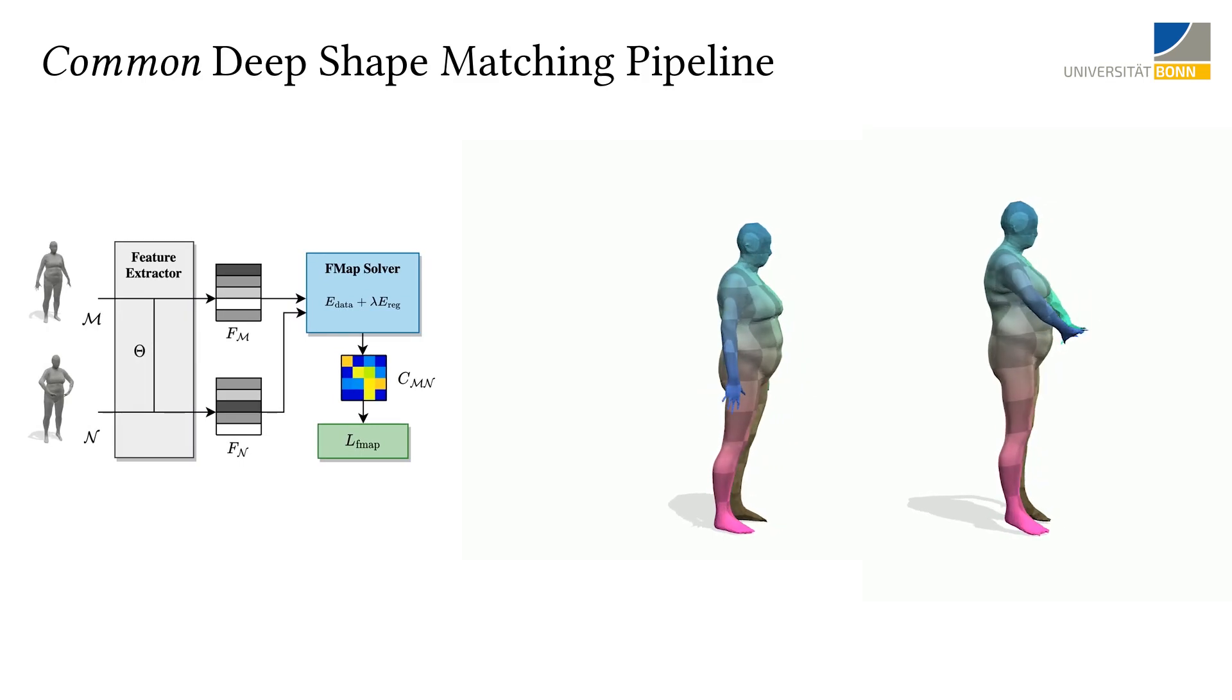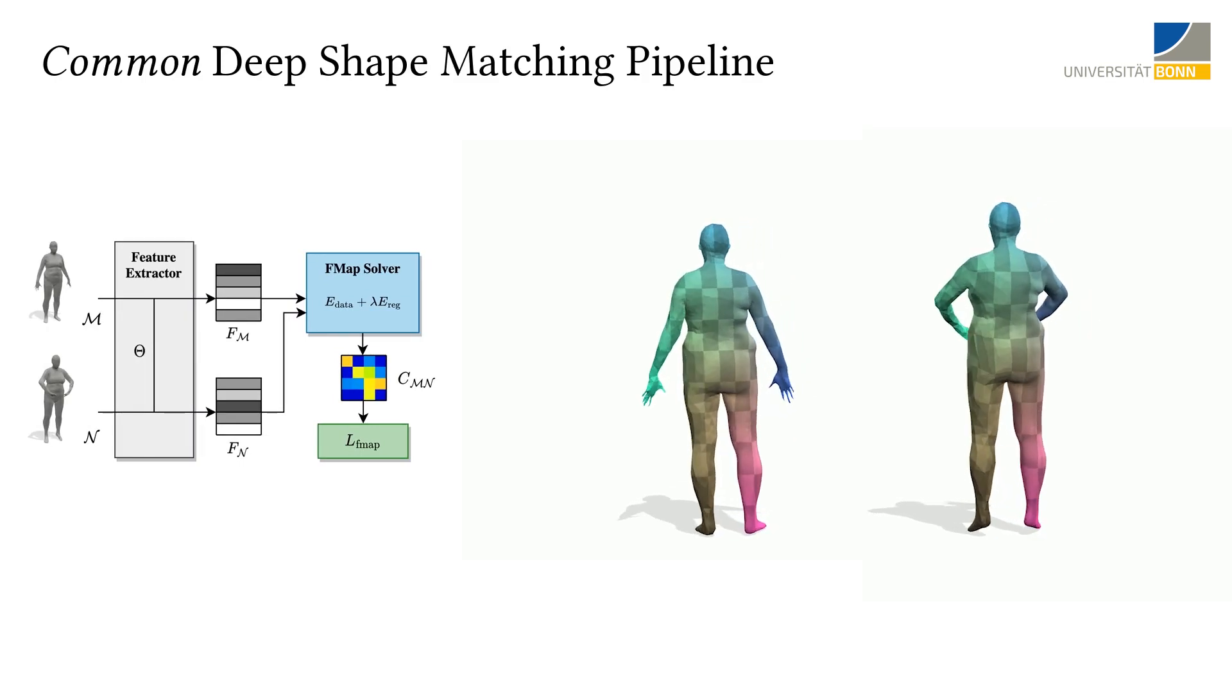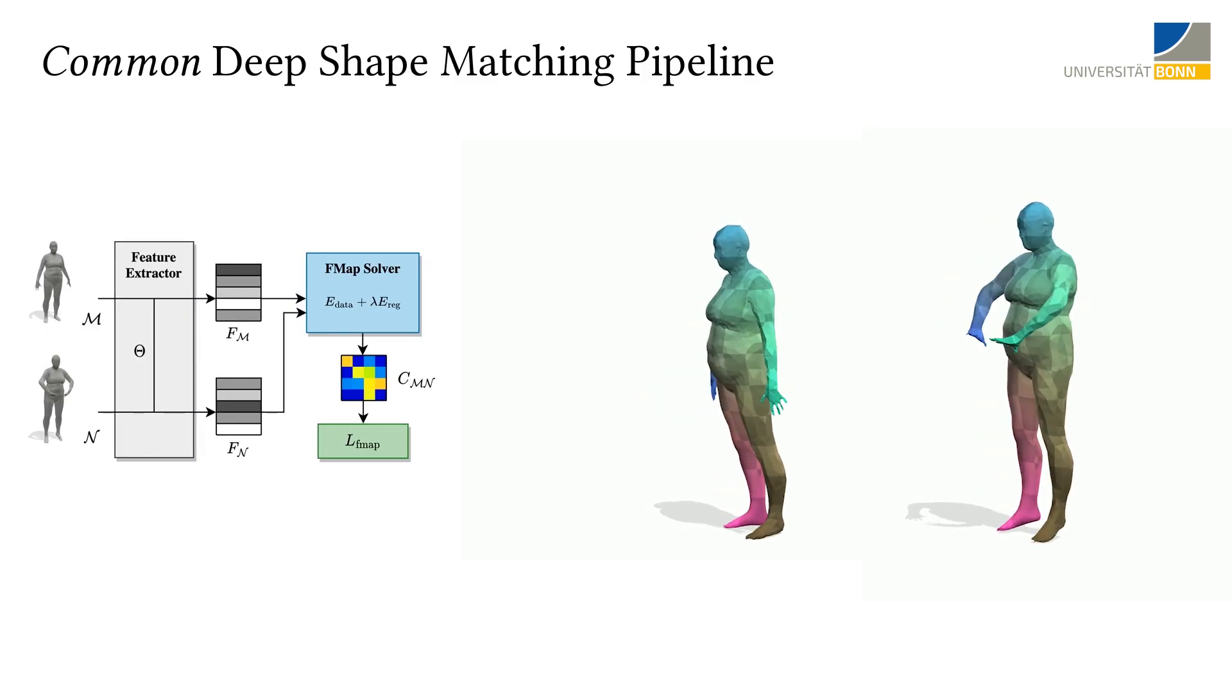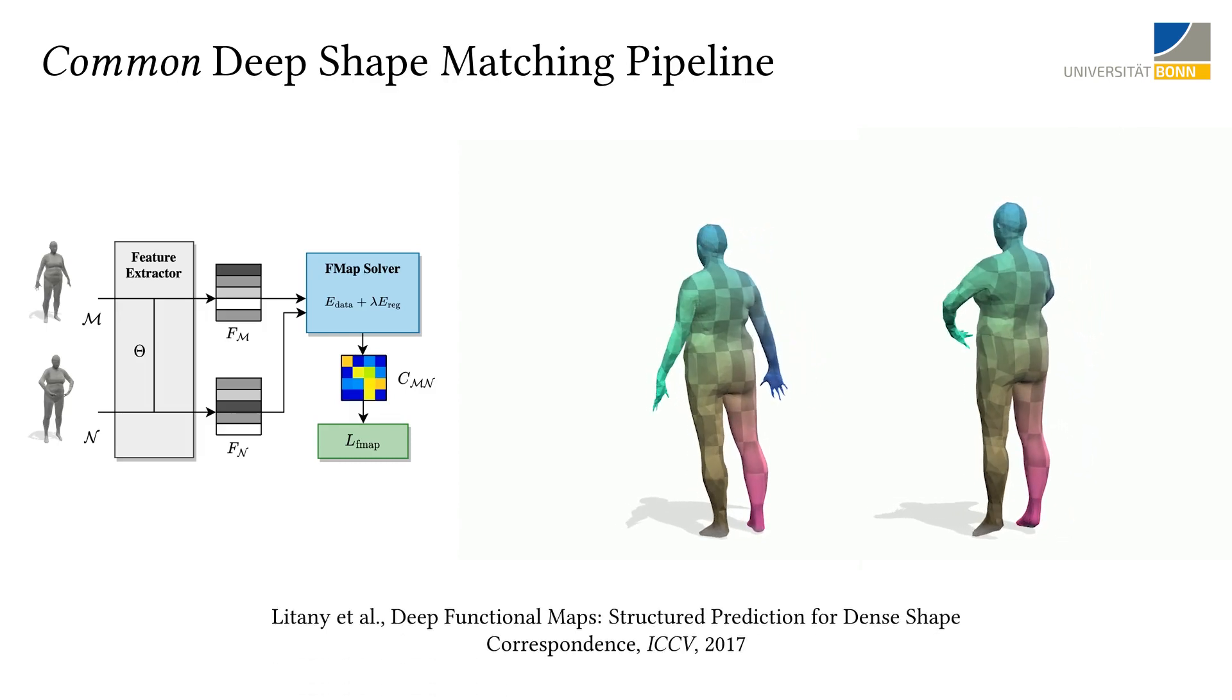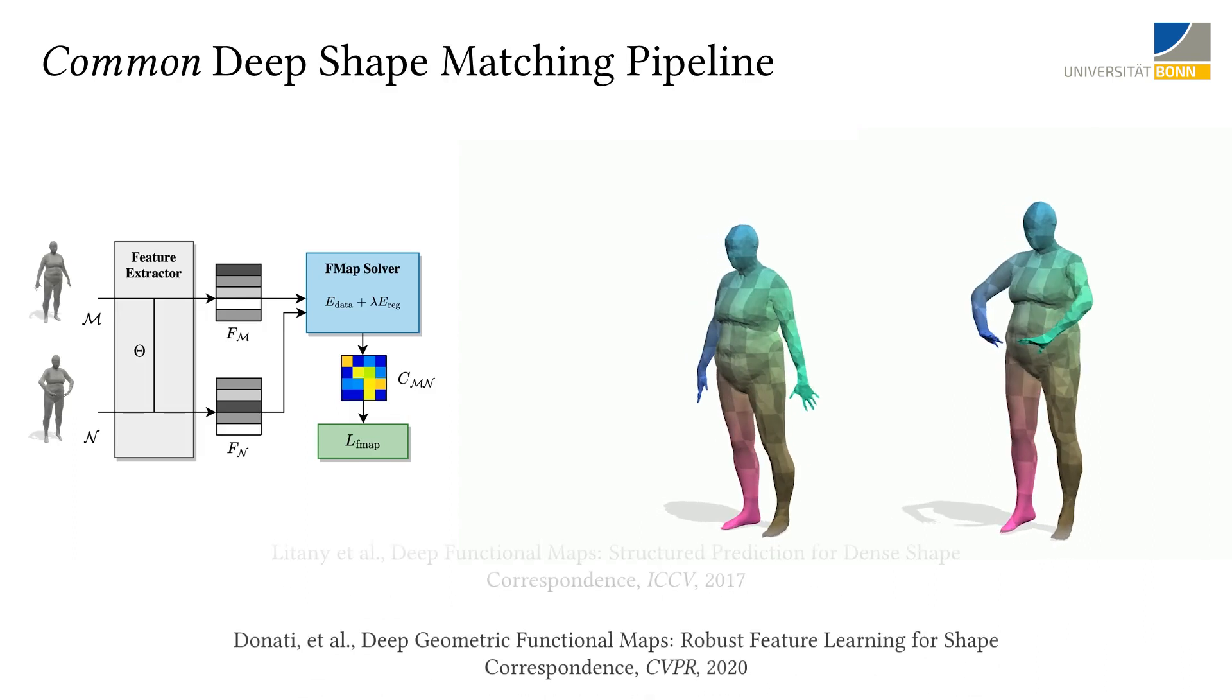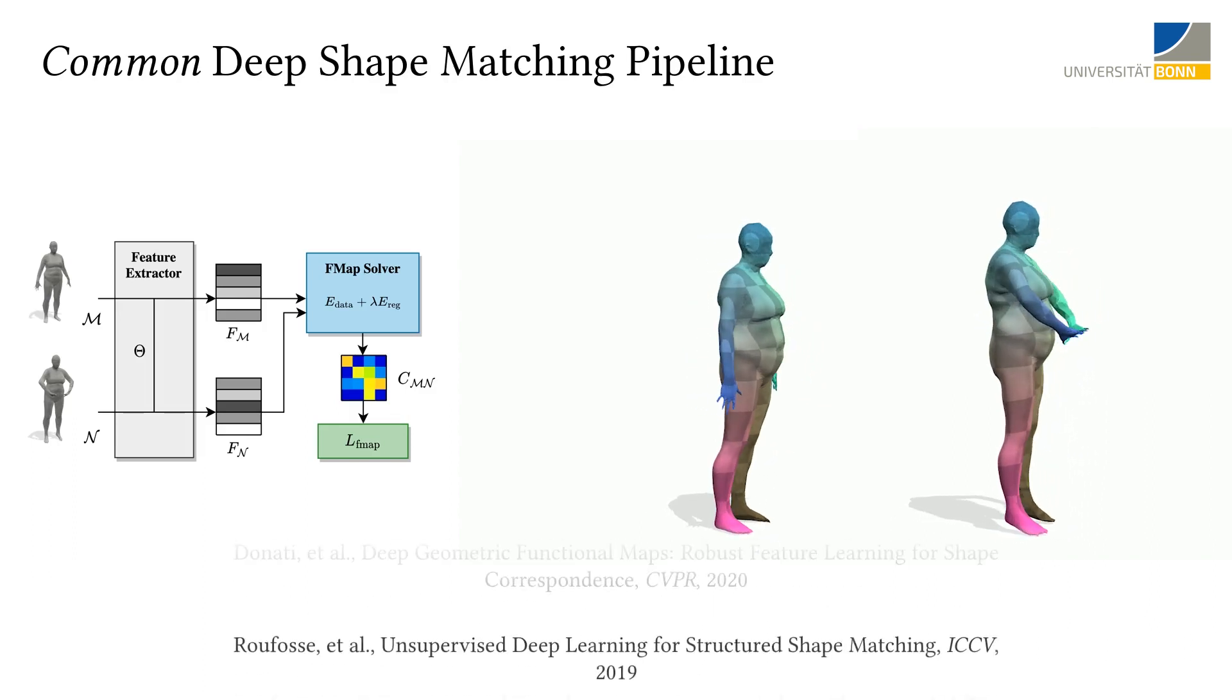During test time, correspondences between both shapes can be recovered from the functional map by using off-the-shelf post-processing methods. This common deep shape matching pipeline was first proposed by Litani et al. Later, it was adapted by Donati et al. as well as Rufusi et al.